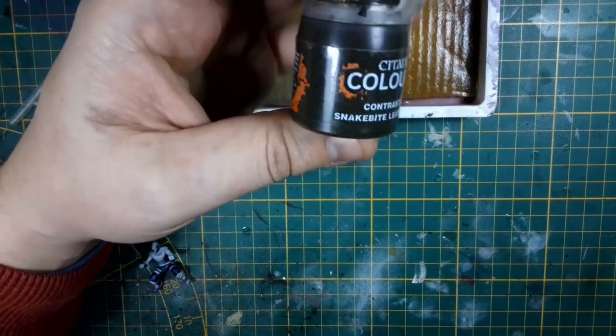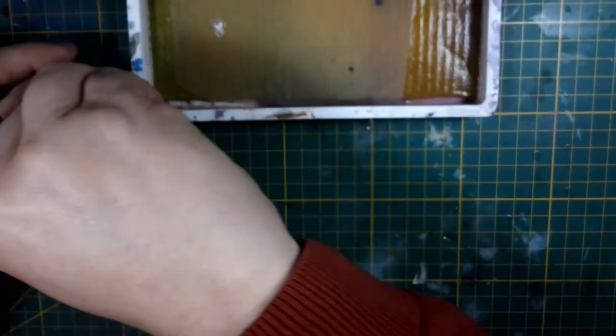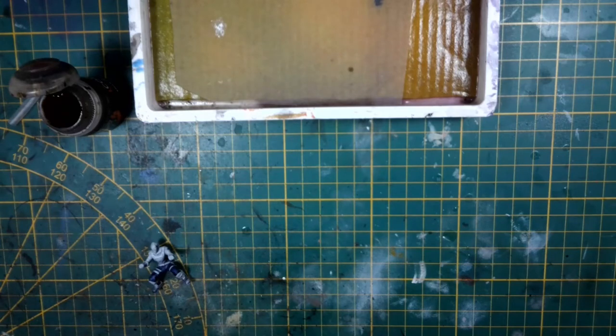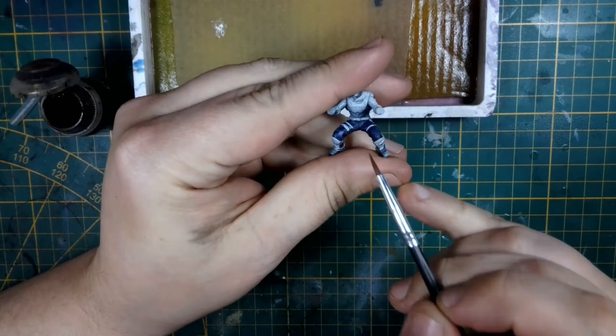The next contrast paint to be applied over this is snakebite leather. The model has quite a few leather parts and I start by applying everything on the legs essentially. I go around picking out all of the different leather parts with this color.